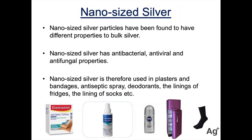Now let's look at some more examples. Nanosilver has different properties to silver. For example, nanosilver has antibacterial, antiviral, and antifungal properties. Therefore we can make use of this in products such as plasters, antiseptic sprays, deodorant, lining of fridges, socks, and very often in the sheets in operating theatres or in the curtains.